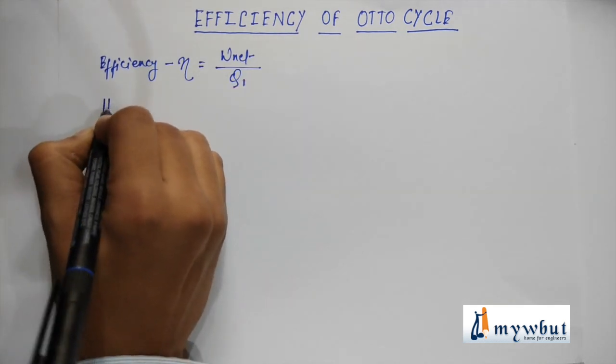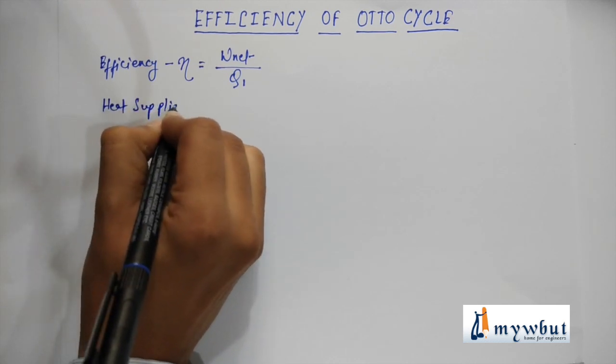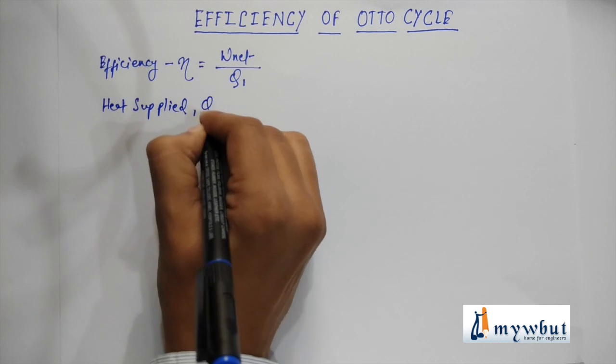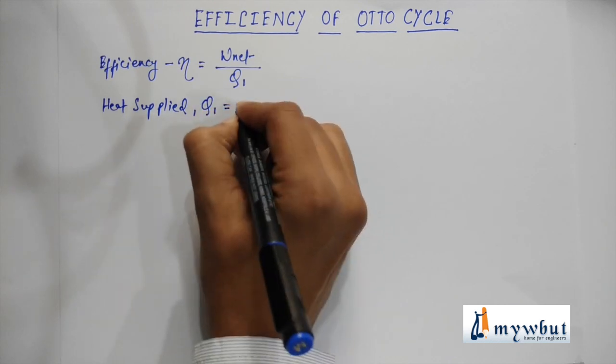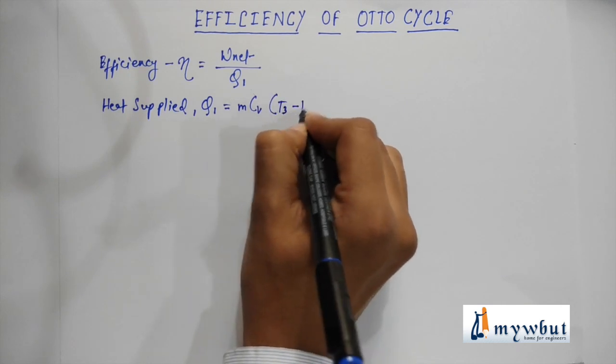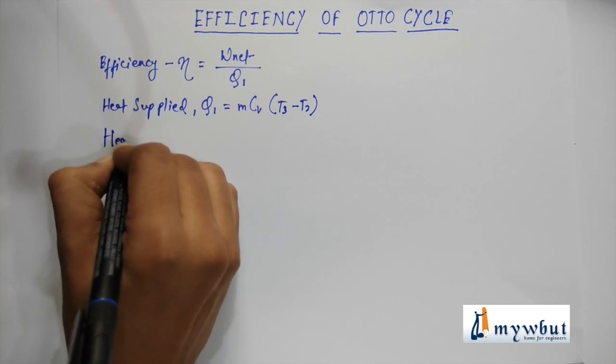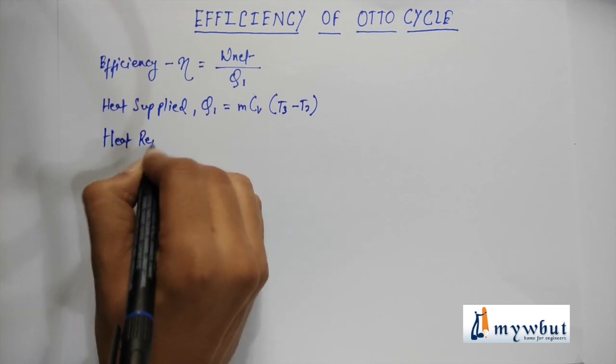And heat rejected, that is Q2, is m into Cv into T4 minus T1.